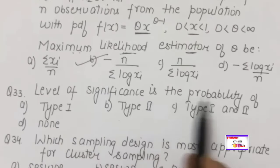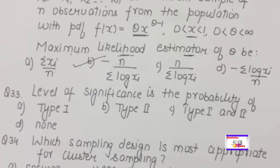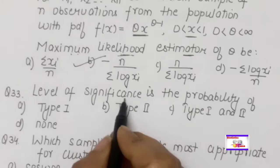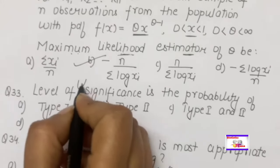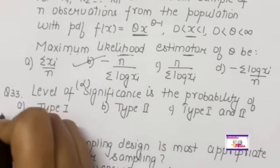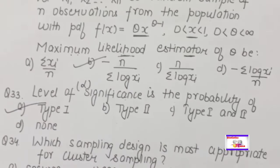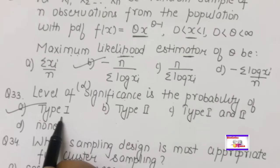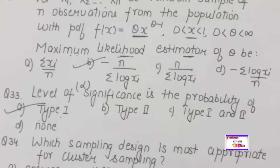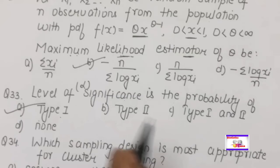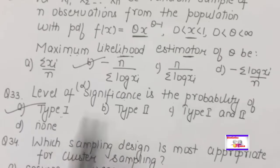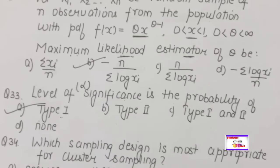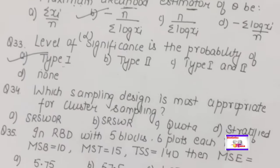The level of significance α is the probability of Type I error — rejecting the null hypothesis when it is true. In quality control terminology, Type I error is also called the producer's risk.